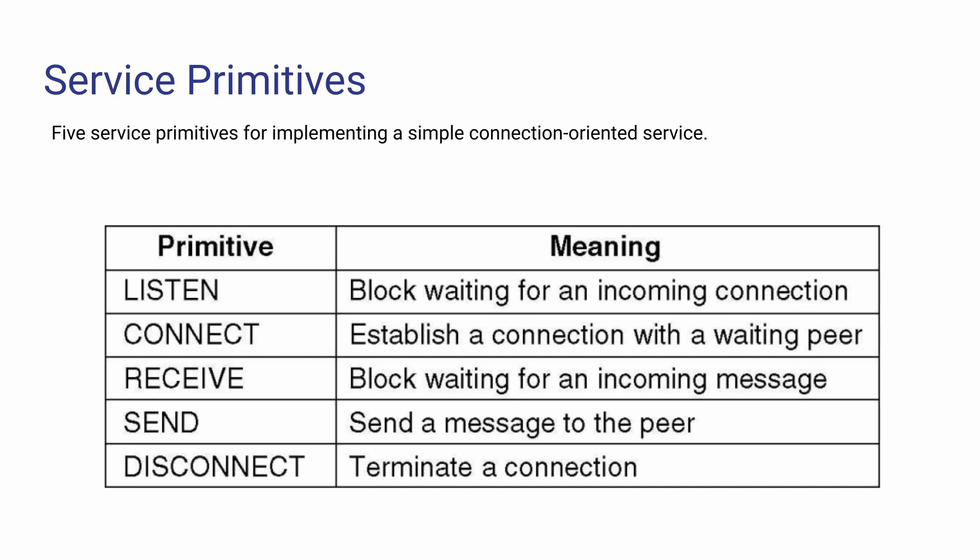Finally, Service Primitives. To implement connection-oriented service, there are several primitives: Listen — wait for incoming connection; Connect — establish a connection with another node on the network that is listening; Receive — block waiting for an incoming message; Send — send a message to the peer; Disconnect — terminate the session. These are the service primitives.